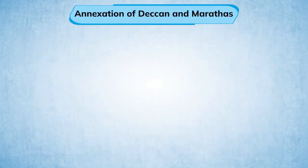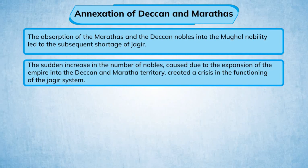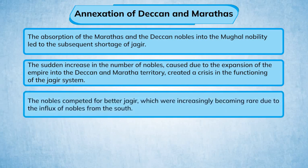Annexation of Deccan and Marathas: The absorption of the Marathas and the Deccan nobles into the Mughal nobility led to a subsequent shortage of Jagirs. The sudden increase in the number of nobles, caused by the expansion of the empire into the Deccan and Maratha territory, created a crisis in the functioning of the Jagir system. The nobles competed for better Jagirs, which were increasingly becoming rare due to the influx of nobles from the south.